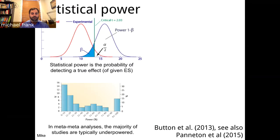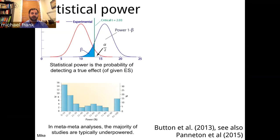An important observation is that when you look across studies, the majority are typically underpowered — they had fewer participants than would be necessary to reliably recover the effect. You can't determine this on an individual study basis; instead, you look at the mean effect across the literature and ask whether most people had power to recover that effect. The answer typically is no — our sample sizes are too small to recover the mean effect in our literatures.